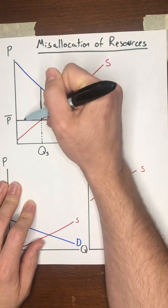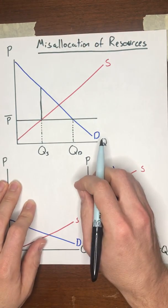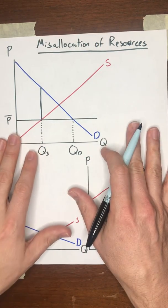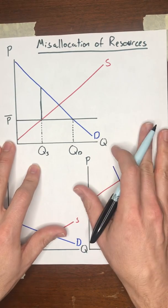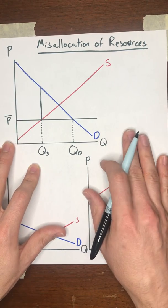The difference between his willingness to pay and the controlled price represents a misallocation of resources, and that can be a really serious problem when you have a price control.